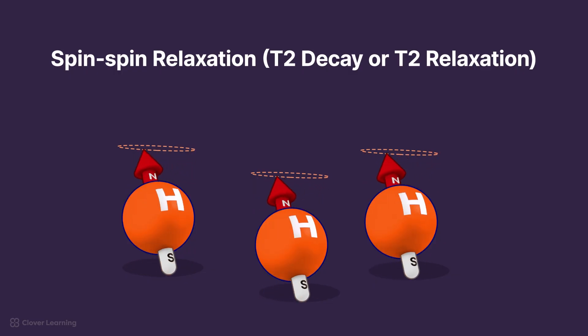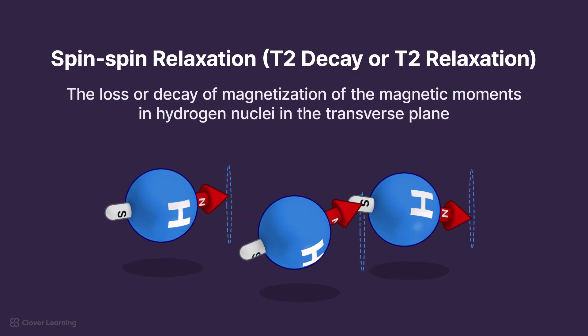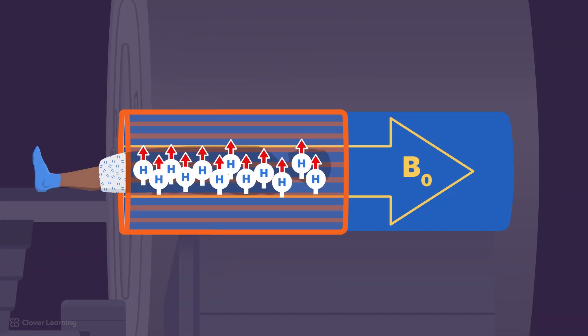Spin-spin relaxation, also known as T2 decay or T2 relaxation, refers to the loss or decay of magnetization of the magnetic moments in hydrogen nuclei in the transverse plane, caused by the interaction between the magnetic fields of neighboring nuclei. The RF pulse causes the spins of the hydrogen nuclei to synchronize or to be in phase with one another, resulting in increased magnetization in the transverse plane.